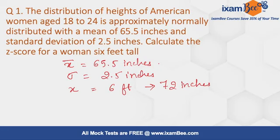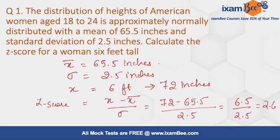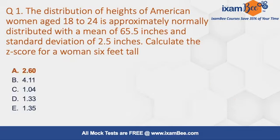First we convert 6 feet into inches, which gives us 72 inches by multiplying by 12. The formula for z-score is x minus x-bar divided by standard deviation. Substituting: 72 minus 65.5 divided by 2.5, which gives 6.5 divided by 2.5, equals 2.6. Option A, 2.60, is the correct answer. This is a very simple, direct formula-based question that would be worth one mark.